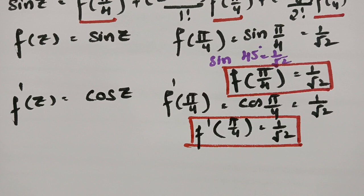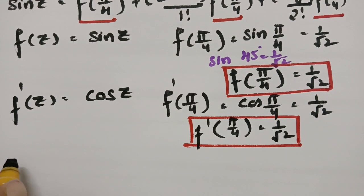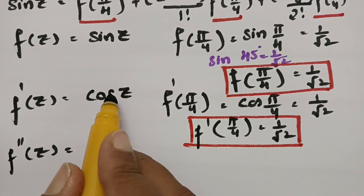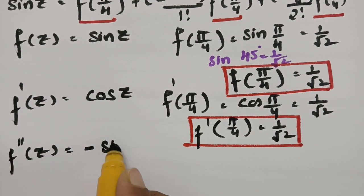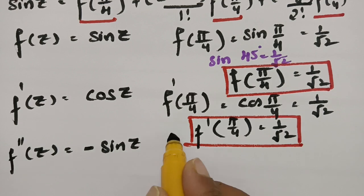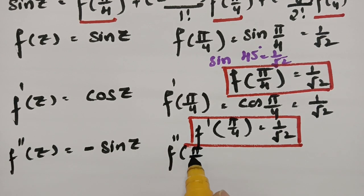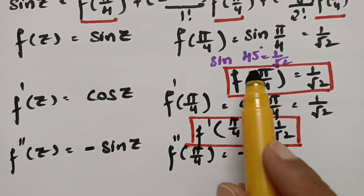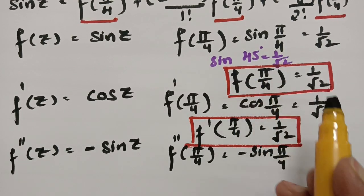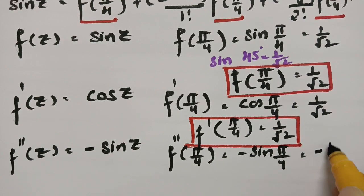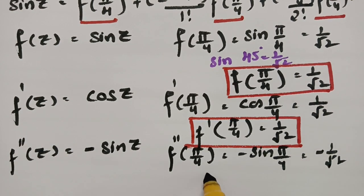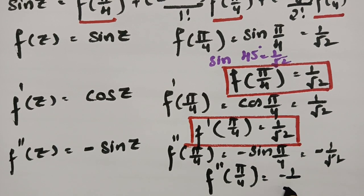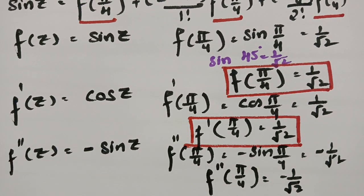Next is the second derivative f''(z). The derivative of cos(z) is −sin(z), so f''(π/4) = −sin(π/4). Since sin(π/4) = 1/√2, this gives f''(π/4) = −1/√2.